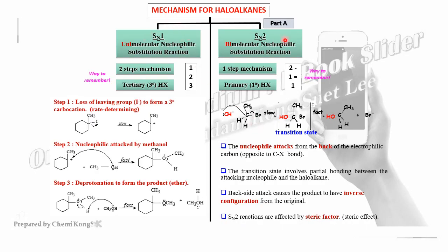For SN2 bimolecular nucleophilic substitution: the nucleophile (normally strong) performs a backside attack because hydrogen is a small atom, making backside attack easy. The nucleophile attacks from the back of the electrophilic carbon, opposite to the C-X bond — this is the slow (rate-determining) step. OH–C bond forming and C–Br bond breaking occur simultaneously, forming a transition state with partial bonding. The product has an inverted configuration: initially slanted left, now slanted right after forming the alcohol.